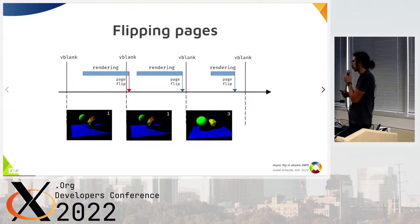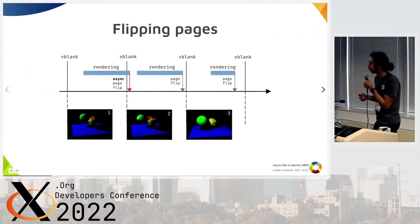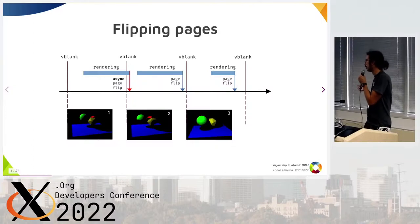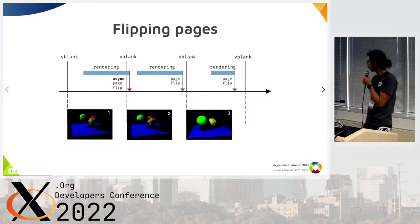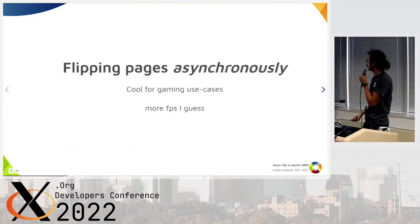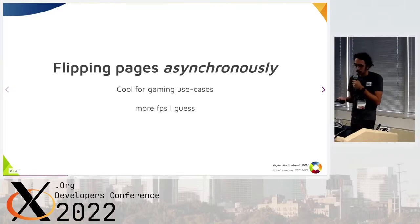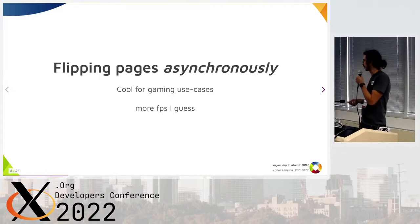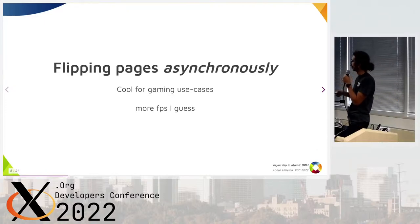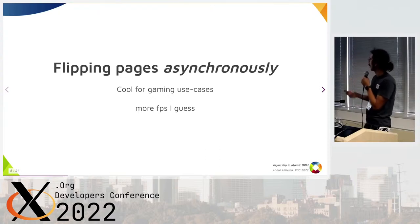So here is where the async page flip comes in. You just say: whatever, present right now, regardless of heavy tearing or any artifacts — just present it. And why do we do that? Because, like all the other developers here, we want more frames per second in our games. This will get us some more one or two frames per second.